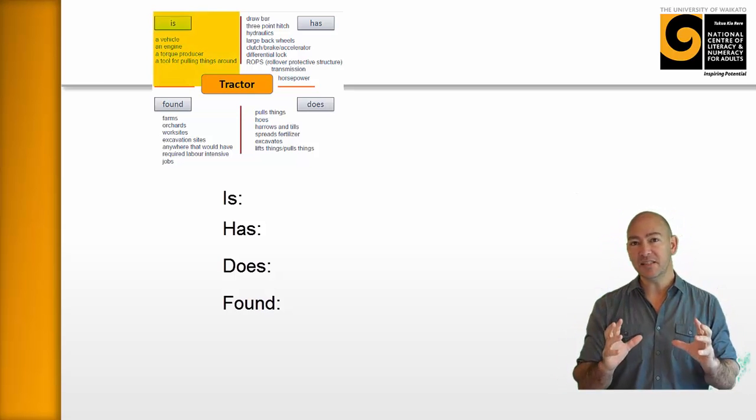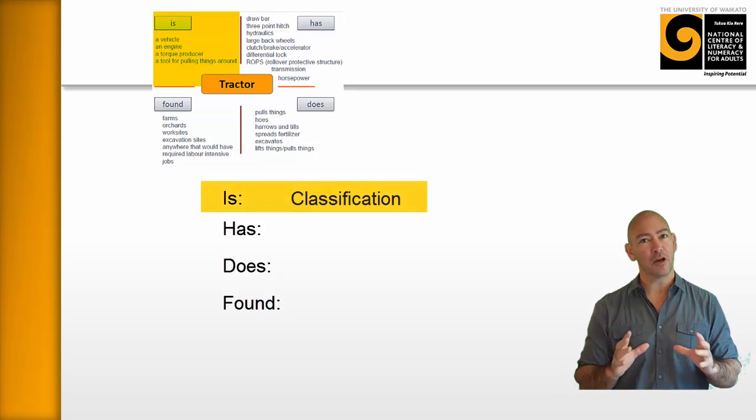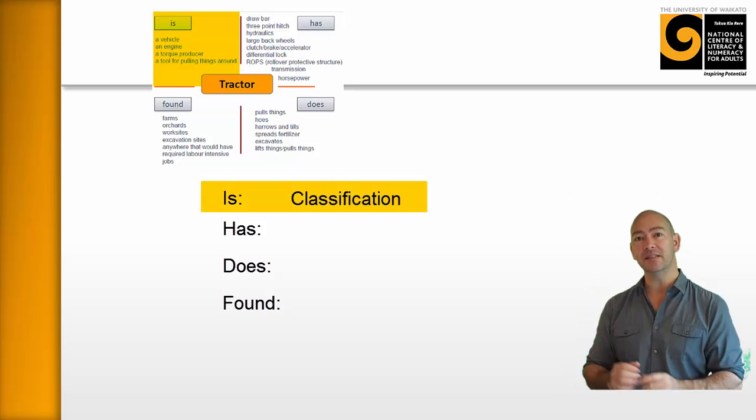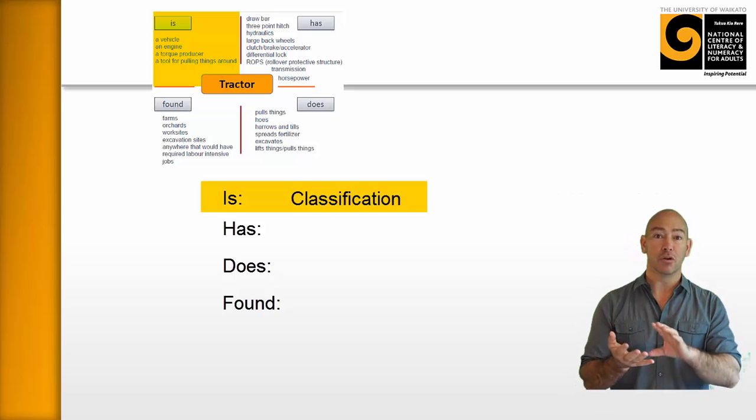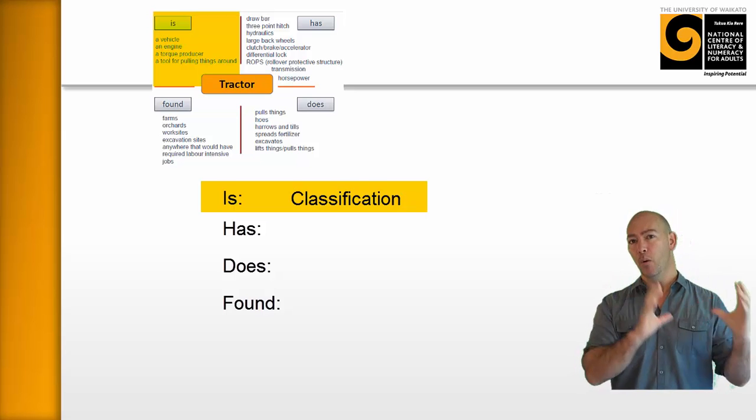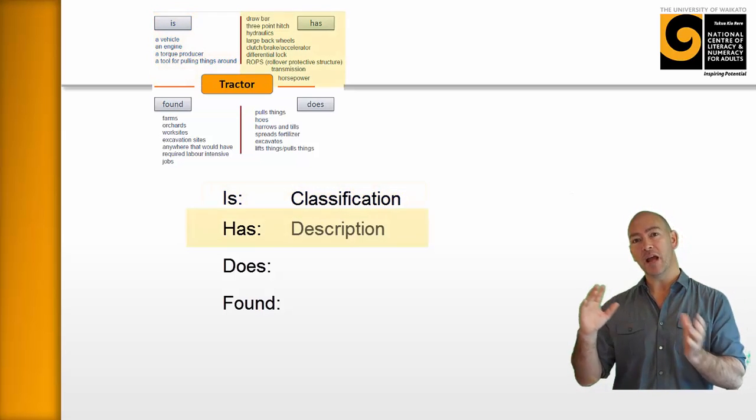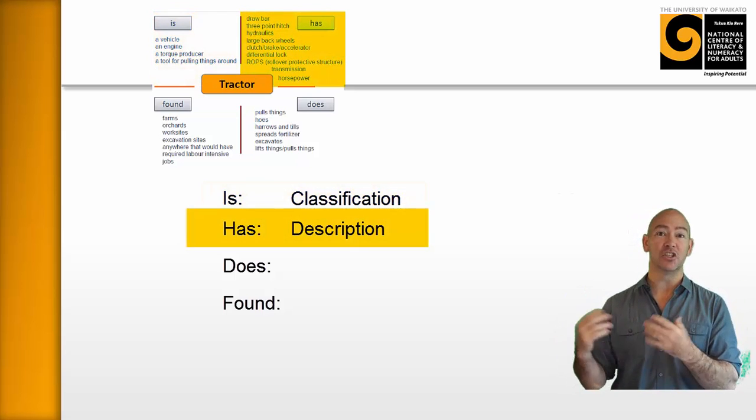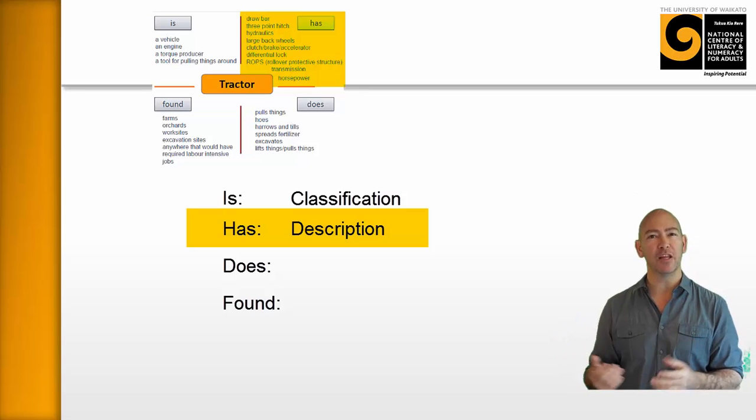When we use the tag is, what we're doing is we're classifying the object. So a tractor is a vehicle or a tool, really, a tool to do a task. So we're classifying what that is. If we look at has, has provides a description. So now we're describing the object.